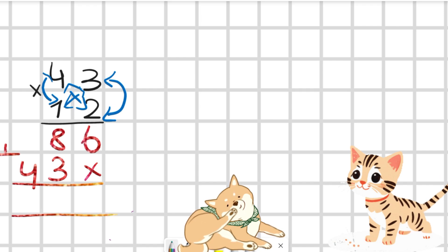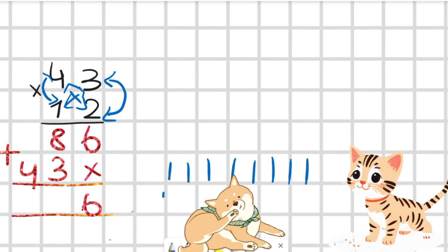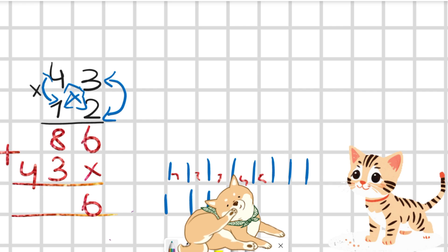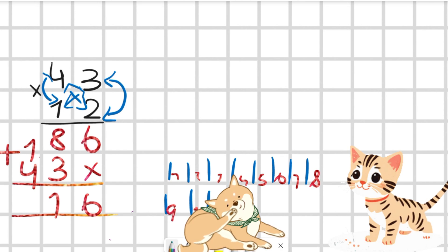Let's add them together with a plus sign. 6 with 0 is 6. Now we are going to draw 8 lines — 1, 2, 3, 4, 5, 6, 7, 8 — and 3 more: 1, 2, 3. Let's count them all again: 1, 2, 3, 4, 5, 6, 7, 8, 9, 10, 11. So 8 plus 3 is 11 — we are going to write 1 here and 1 will carry over, so it's 4 plus 1 which is 5.